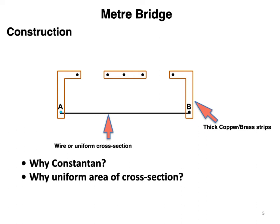Why uniform area of cross section? Uniform area of cross section is essential so that the length of the wire and its resistance are proportional to each other, which is possible only if the area of cross section is uniform. Why thick strips? Thick strips ensure that the resistance offered by the strips is negligible because we don't take the resistance of the strips into consideration.